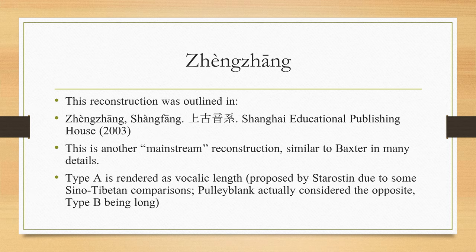The third reconstruction we consider is by Zhengzhang Shangfang, proposed in a book of 2003. It is another of the three mainstream reconstructions and is similar to both Baxter, which we already considered, and Starostin, which we will cover later, in many details. It renders type A as syllables with long vowels. This idea was first proposed by Starostin in this particular form due to some Sino-Tibetan comparisons. In Pulleyblank's version of reconstruction the opposite held — type B was long. This reconstruction has several elements peculiar to itself and thankfully covers a lot of old Chinese morphemes.